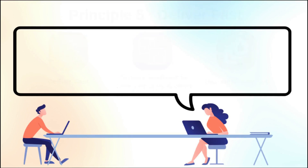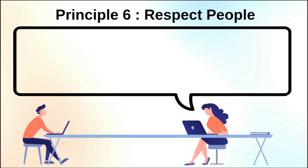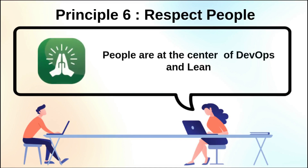The sixth principle is respecting people. People are at the center of DevOps and Lean. If you aren't practicing that, then it typically falls apart. I believe passionately that people are an organization's number one asset, even though organizations don't always behave that way.